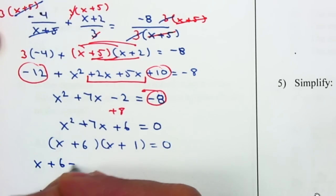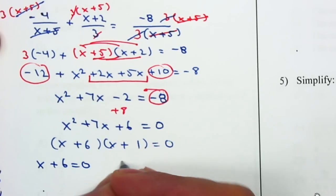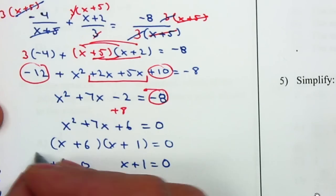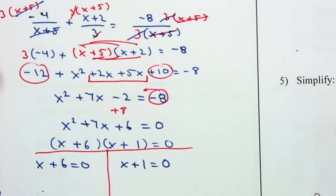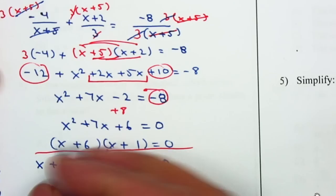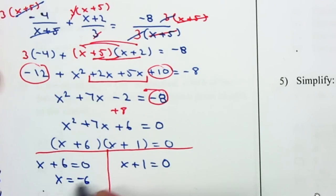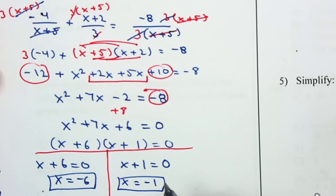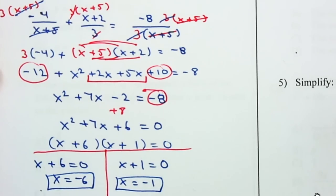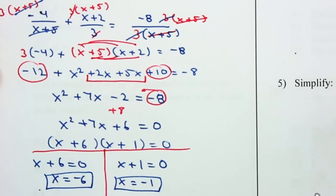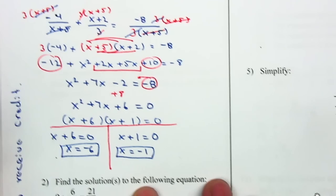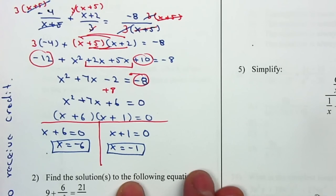Using the zero product property: x + 6 = 0 gives x = -6, and x + 1 = 0 gives x = -1. Now remember that we do have restrictions — we want to find the restrictions by checking that no denominator equals 0.